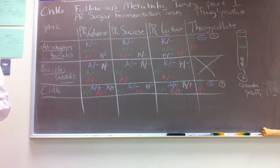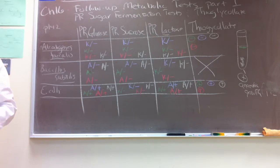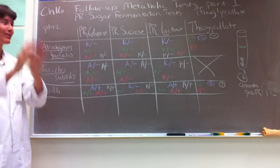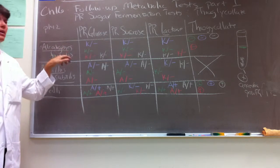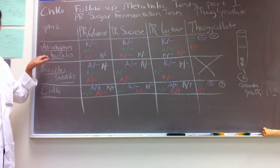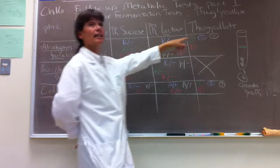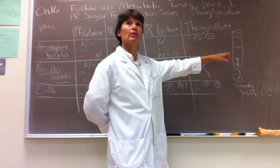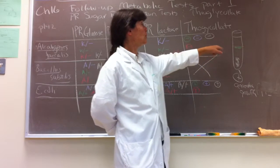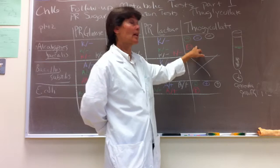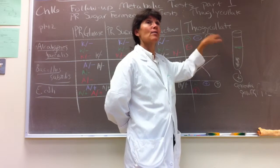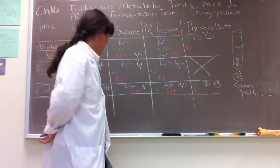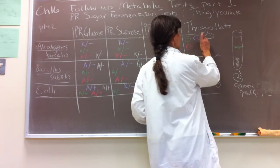Which tests did you run that could provide evidence to support that hypothesis? To add evidence to support the hypothesis that Alkalogenes fecalis could be a strict obligate aerobe, you could run a thioglycolate test and see the pattern of growth. What you all correctly observed is that Alkalogenes fecalis can only grow at the top of the tube where oxygen is present - that supports the hypothesis that it's a strict obligate aerobe.